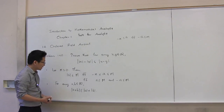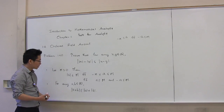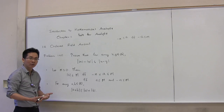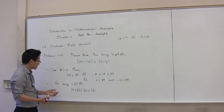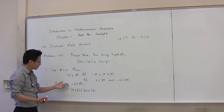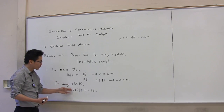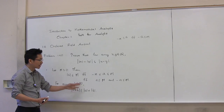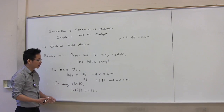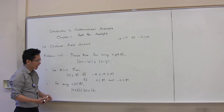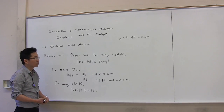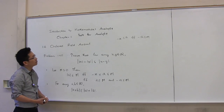Another important result we're going to use is the triangle inequality: for any real numbers a and b, the absolute value of (a + b) is less than or equal to |a| + |b|.